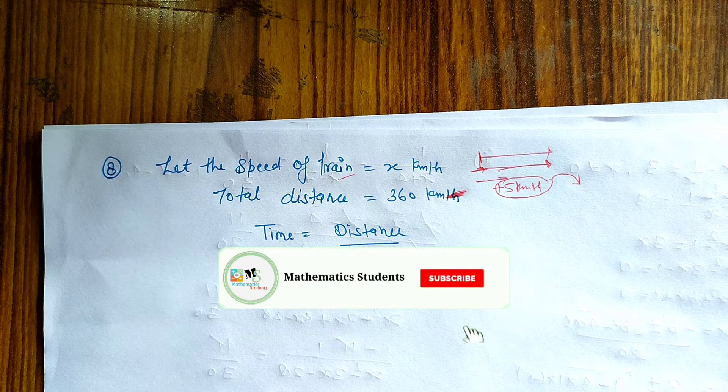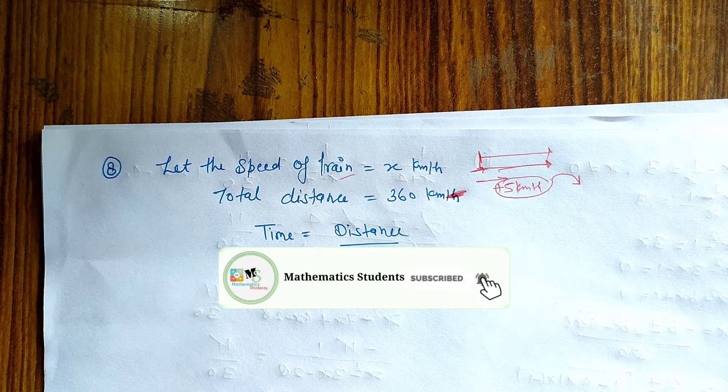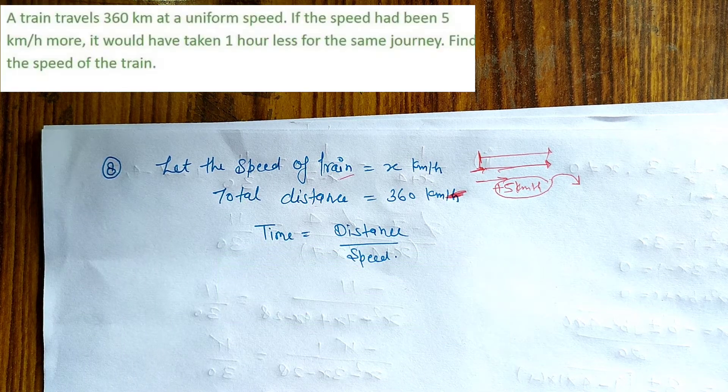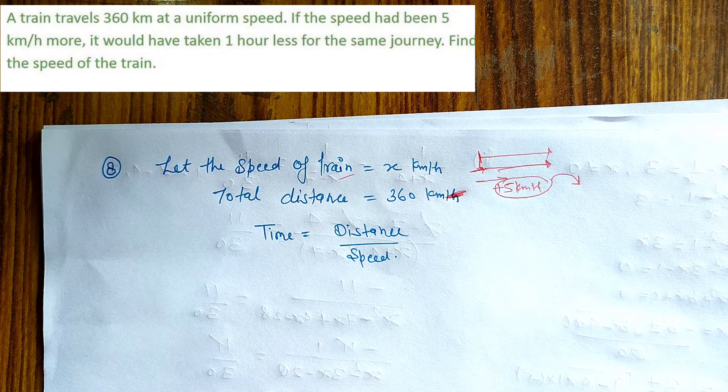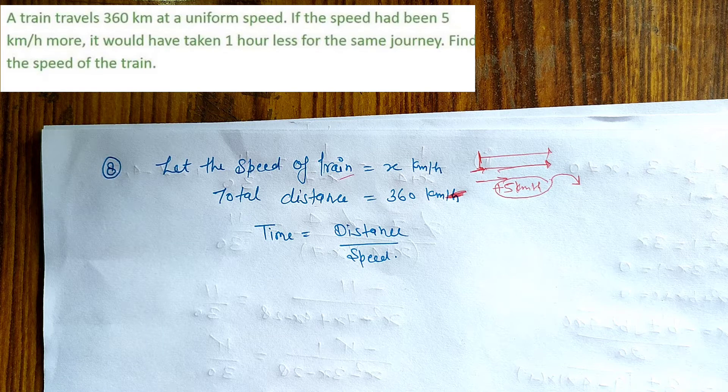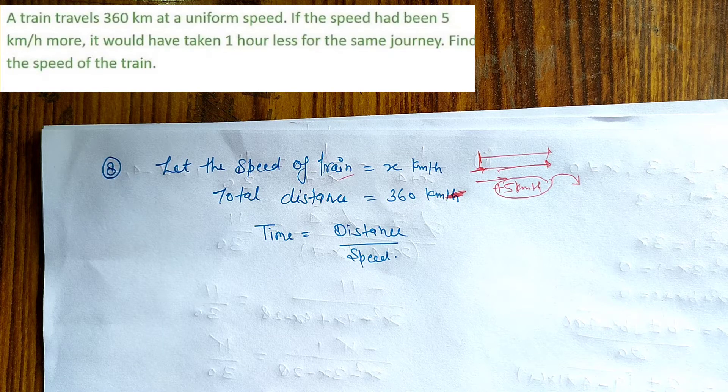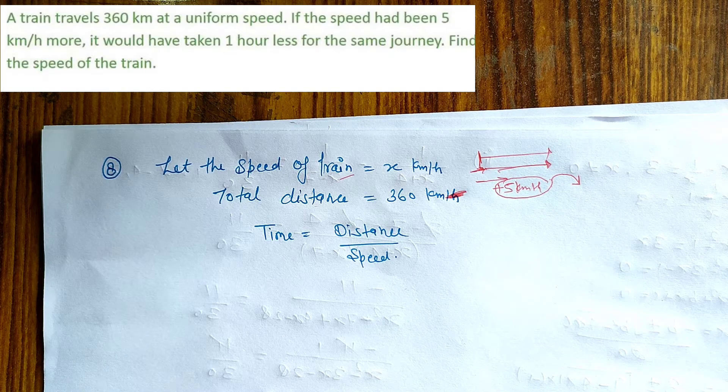Now we will discuss question number eight. A train travels 360 kilometers at a uniform speed. If the speed had been 5 kilometers per hour more, it would have taken 1 hour less for the same journey. Find the speed of the train.